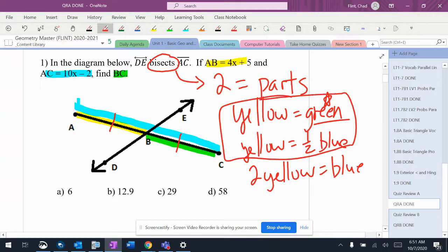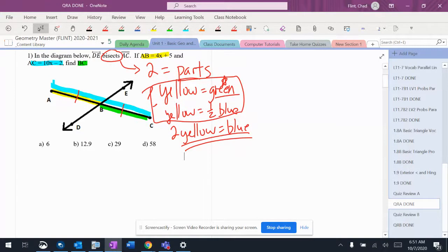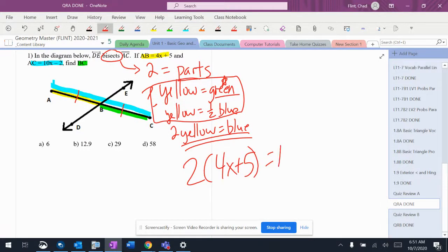Now, these right here, if you didn't have these, that didn't matter. This one's the one you want, all right? Two yellow equals a blue. Because now my equation is just going to be two times four x plus five equals ten x minus two, and I'm going to solve it.